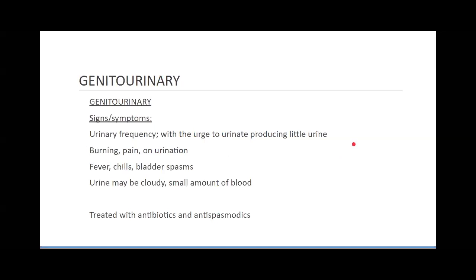UTIs happen a lot more frequently with elderly patients or anyone where hygiene is an issue, though they can happen through other sources as well. They happen frequently to women after sex. We're going to see burning and pain on urination, fever, chills, bladder spasms, urinary frequency with not much output. A very common finding is that the patient will be altered — a little anxious, not really understanding things. This altered mental status is very typical with UTIs in elderly patients.